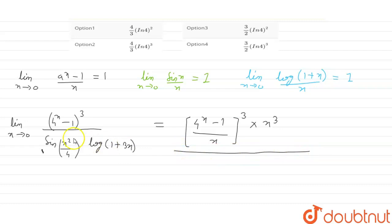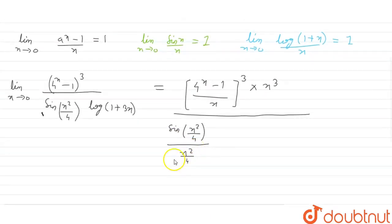Now, the whole divided by sin of x square by 4 divided by x square by 4. We have multiplied x square by 4 in the denominator, so we will multiply x square by 4 into log of 1 plus 3x whole divided by 3x into 3x. We are just making this form.